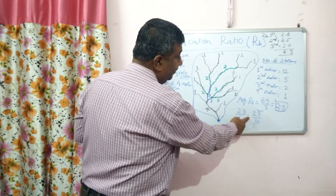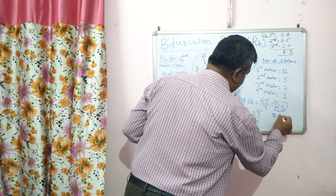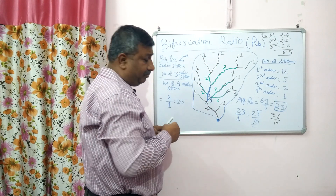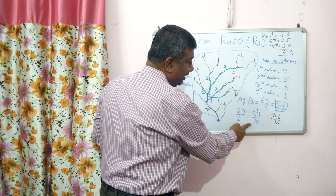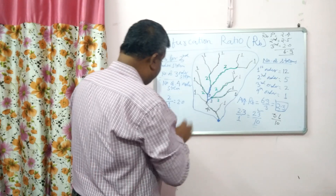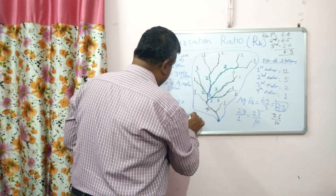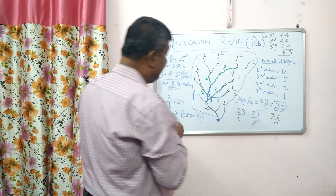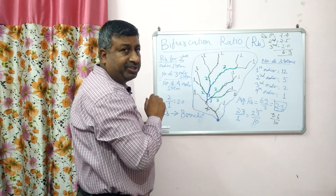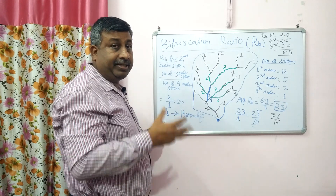If bifurcation ratio is high, suppose 3.6 — written as 36 upon 10 — it means 10 streams form when there are 36 small streams. Compared to 23 streams, where the bifurcation ratio was higher, there are more streams. A higher Rb value indicates more streams, more branching, and this indicates the drainage pattern. More Rb value means more streams, more first and second order streams, meaning more drainage.